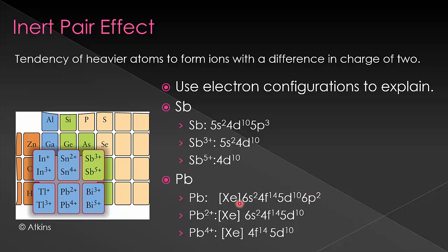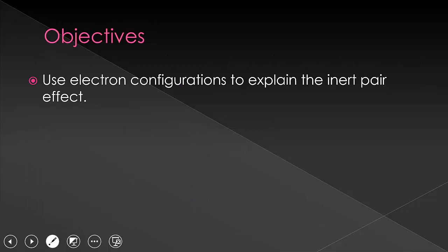2 from removing the p's, 2 from removing the s's. And you can do this with all the rest of them as well, to explain why every one of these has a change of 2. It's because of those s orbitals having 2 electrons in them. So now we've used electron configurations to explain the inert pair.